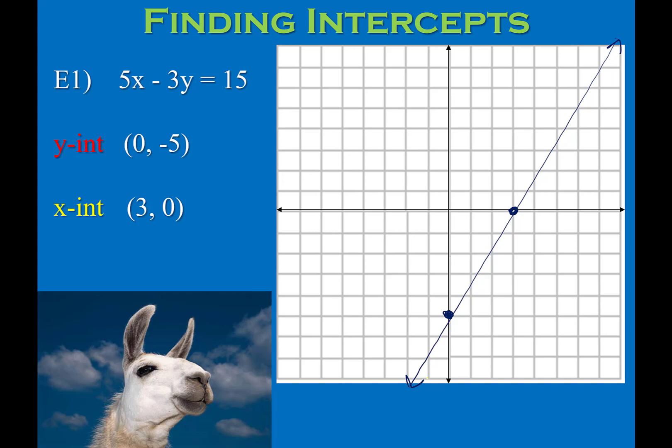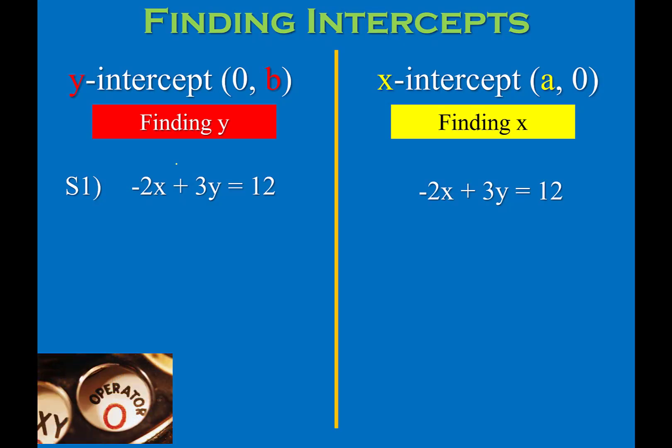Intercepts are actually a nice way to graph as long as the coordinates you get are whole numbers. If you end up getting fractions or decimals, then this isn't really the best method to use. This next problem is yours — go ahead and pause the video and try it for yourself, then unpause to hear the explanation.